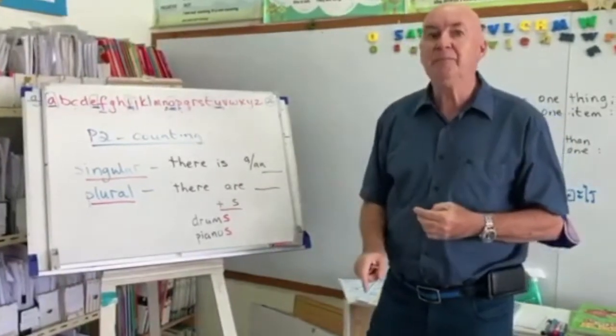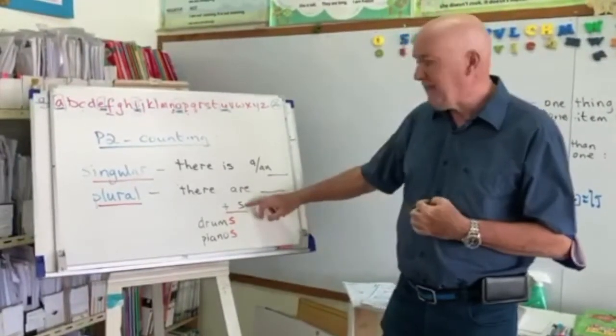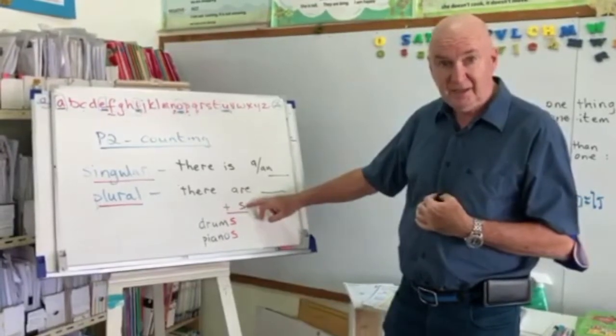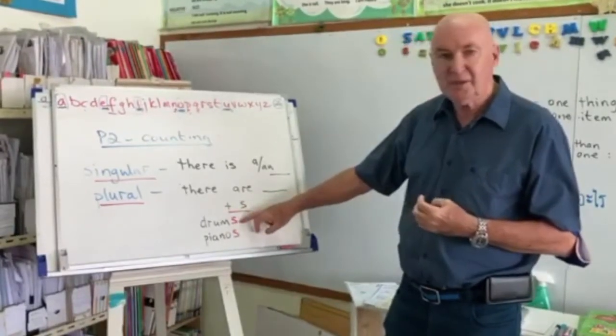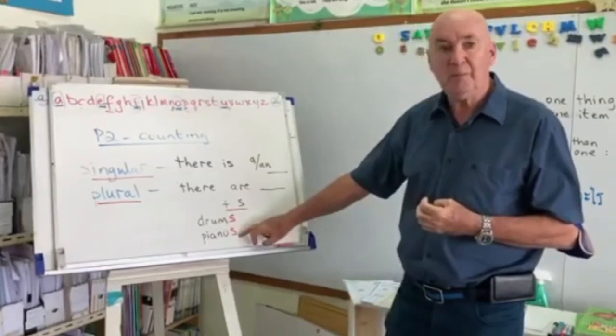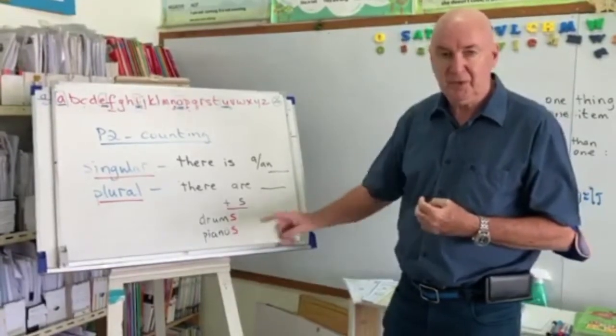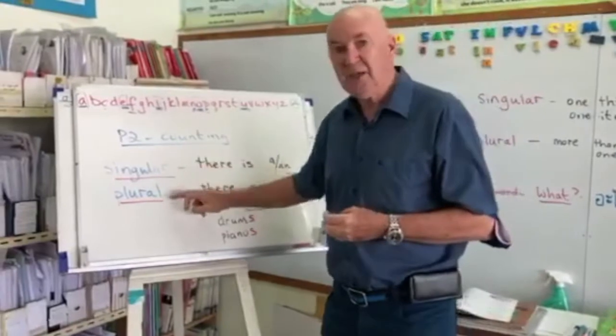Don't forget, when we use plural, you're going to put an S on the end of the word. So, one drum, two drums, one piano, two pianos. So, that's the first thing, singular and plural.